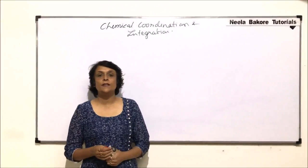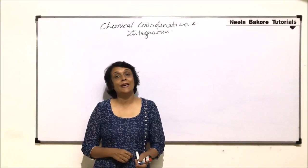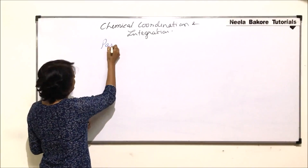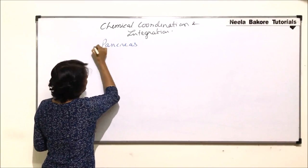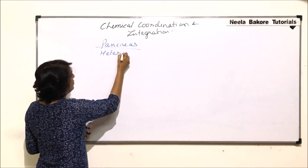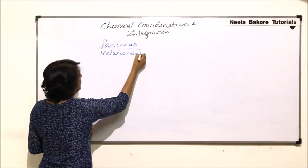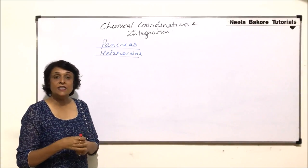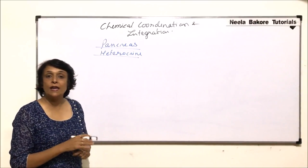The next gland we are discussing is actually a heterocrine gland, and that is the pancreas. Pancreas is a heterocrine gland and the reason it is known as heterocrine gland is because it has endocrine as well as exocrine parts.